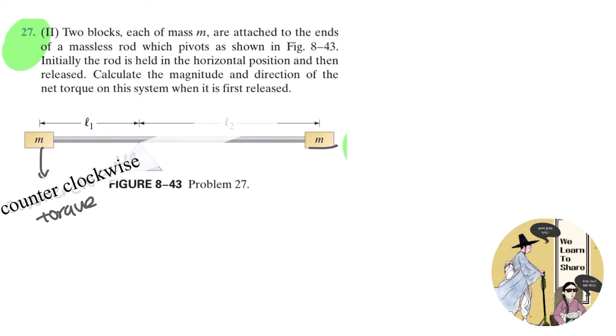And for the right block, there would be a clockwise torque, right? Due to the force of gravity on the right block. And let's say that we're going to call the clockwise the positive direction.